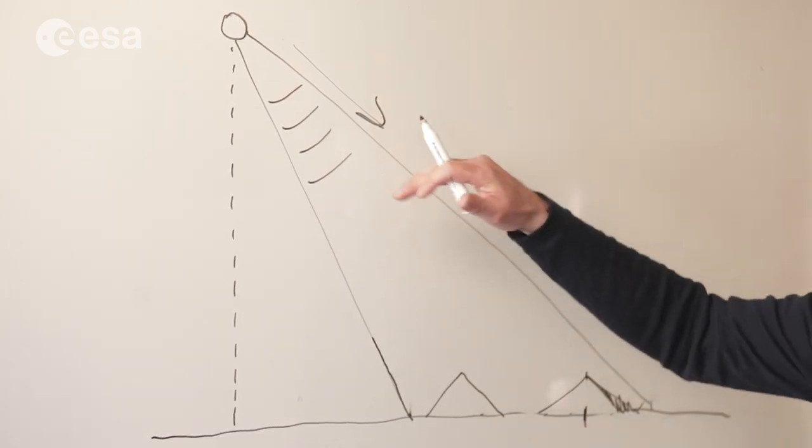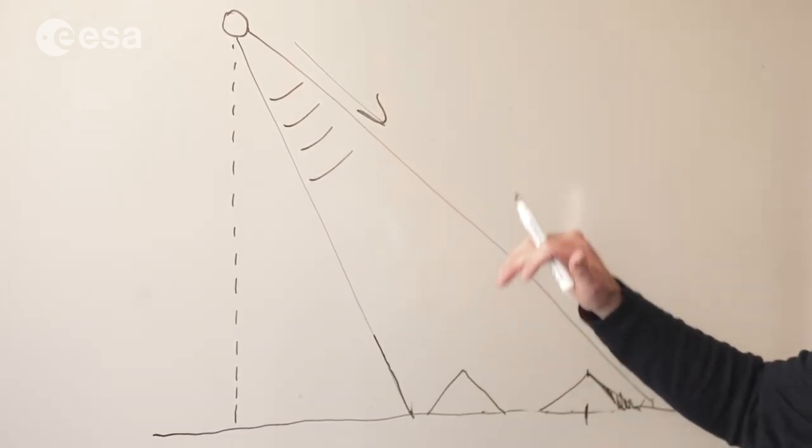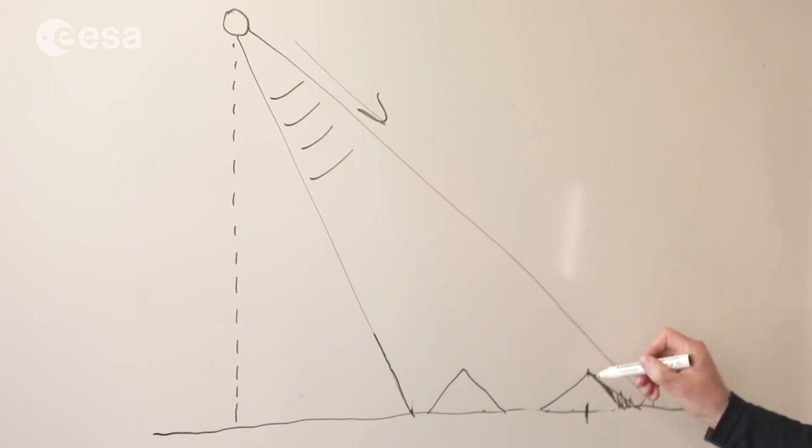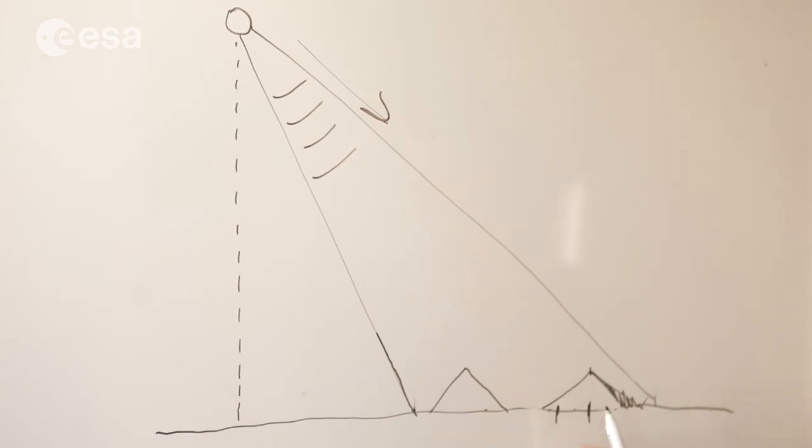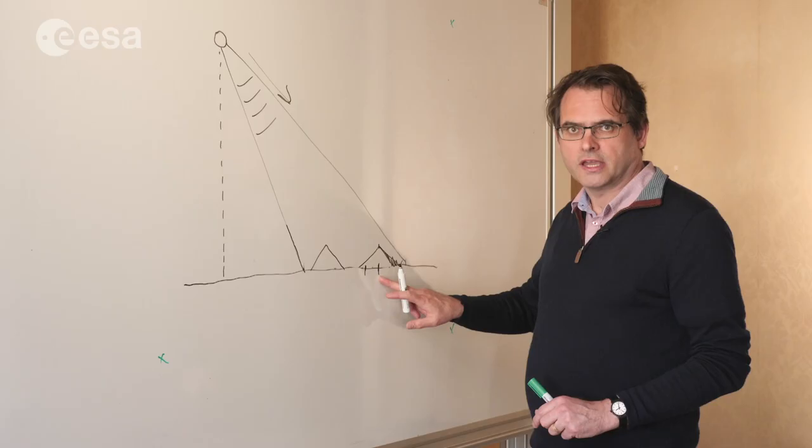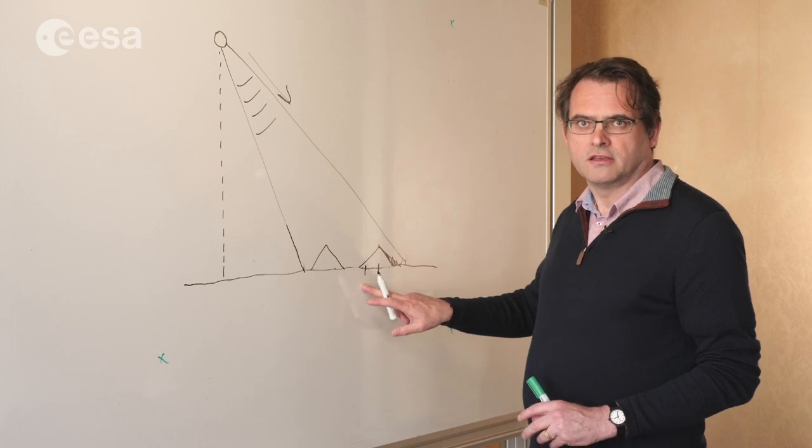But because we are measuring the signals coming back as a function of range from the sensor, we find that they are projected onto their reference surface in a location which is not the proper geographic location, but is a projected range distance.